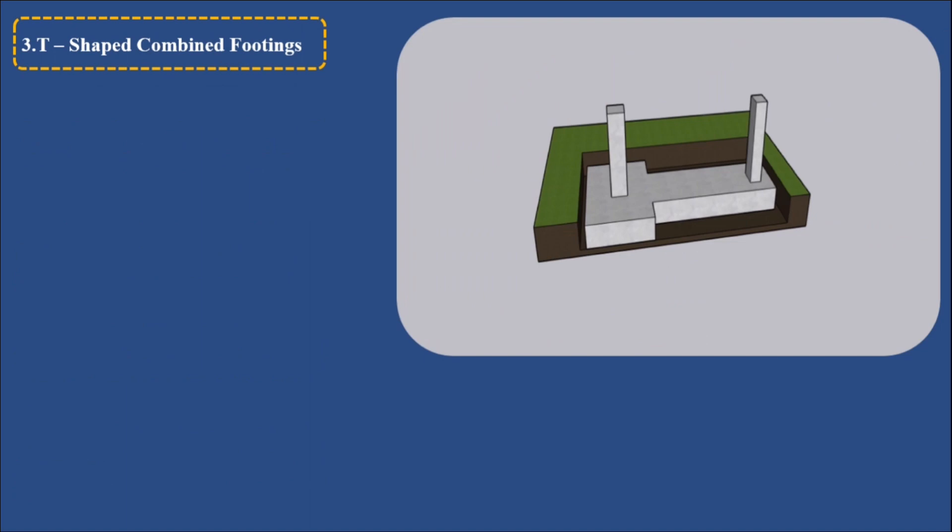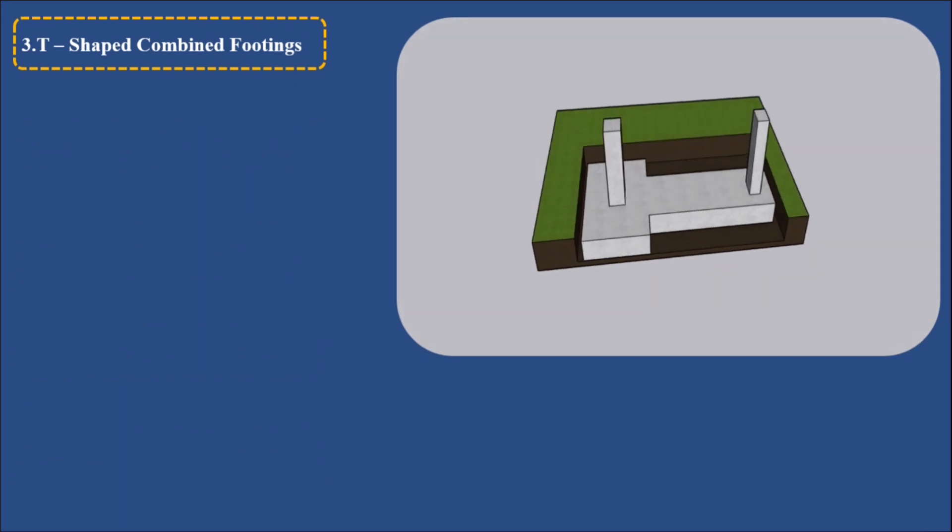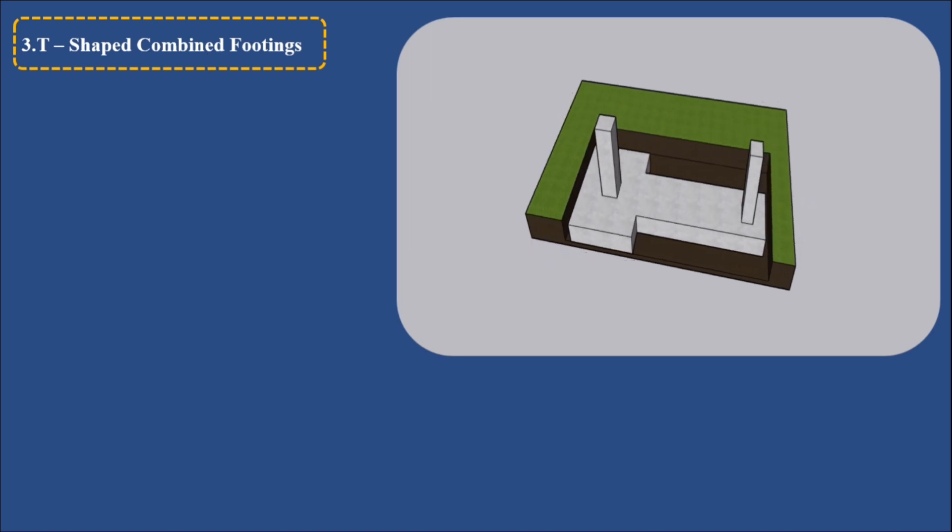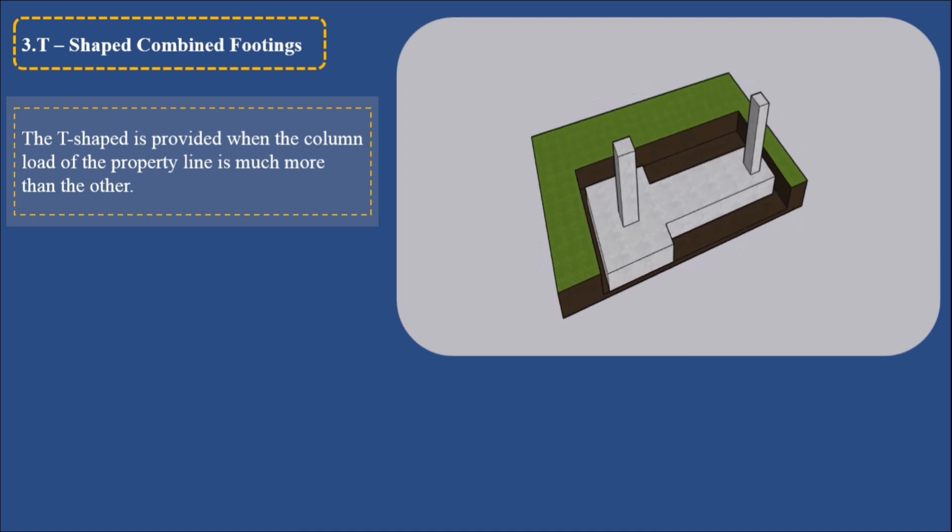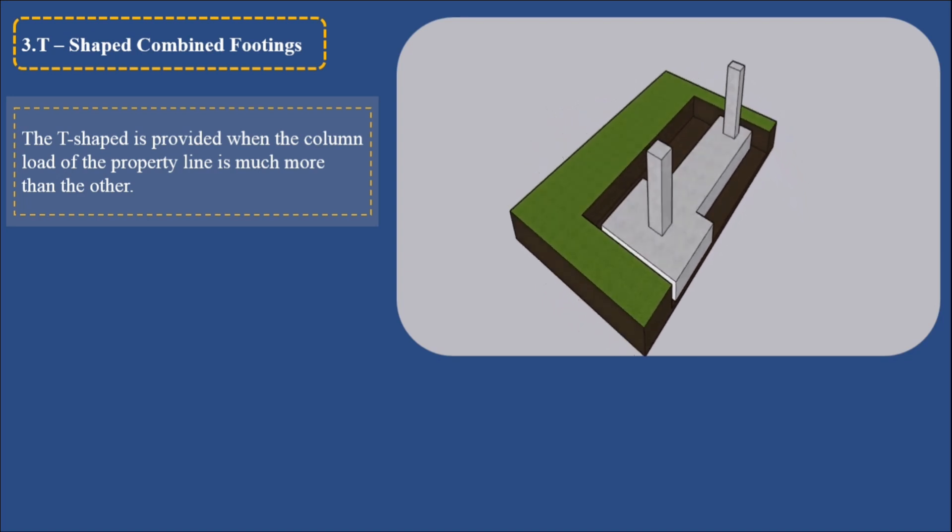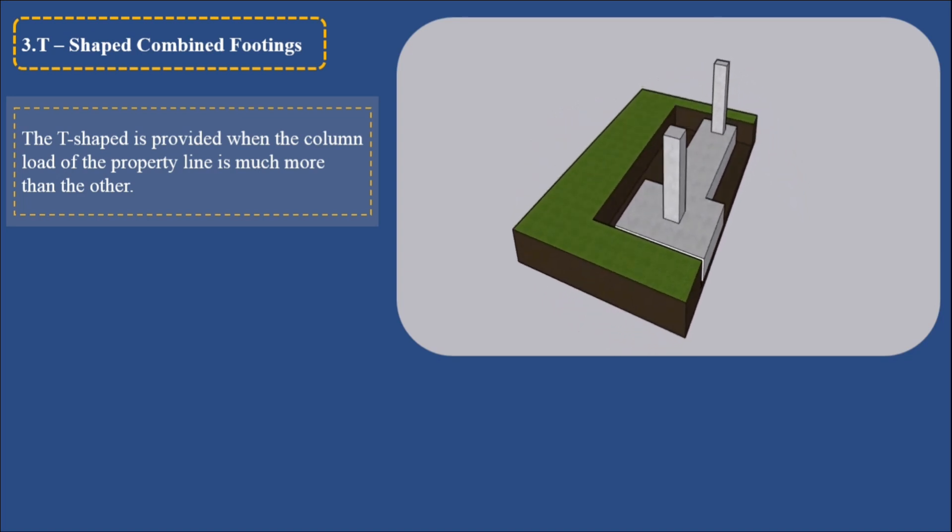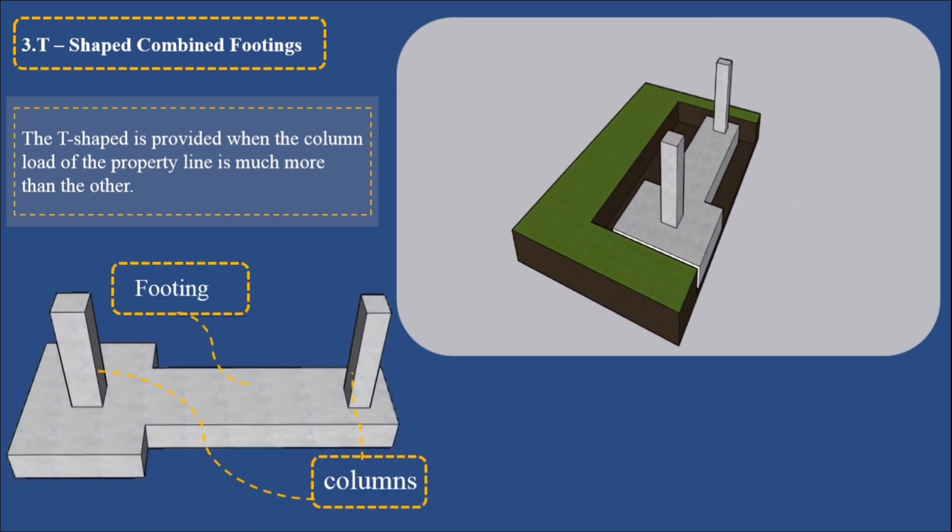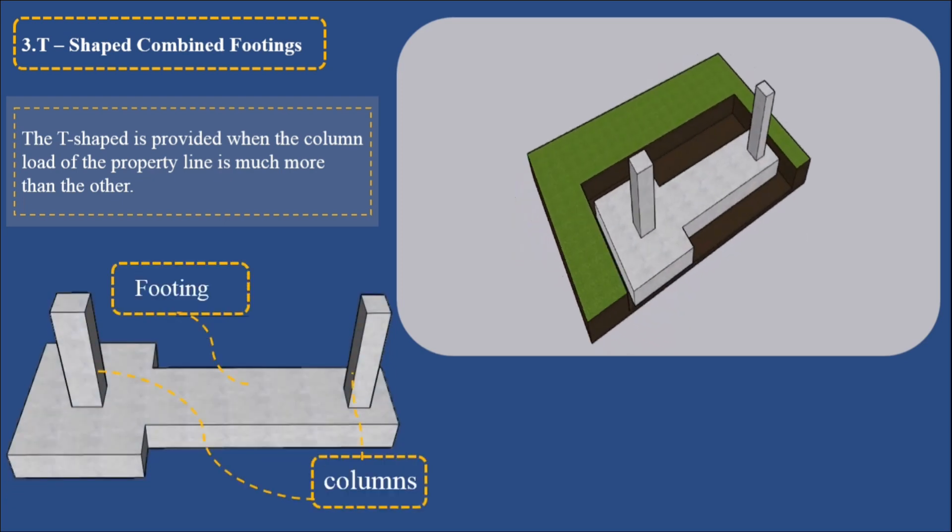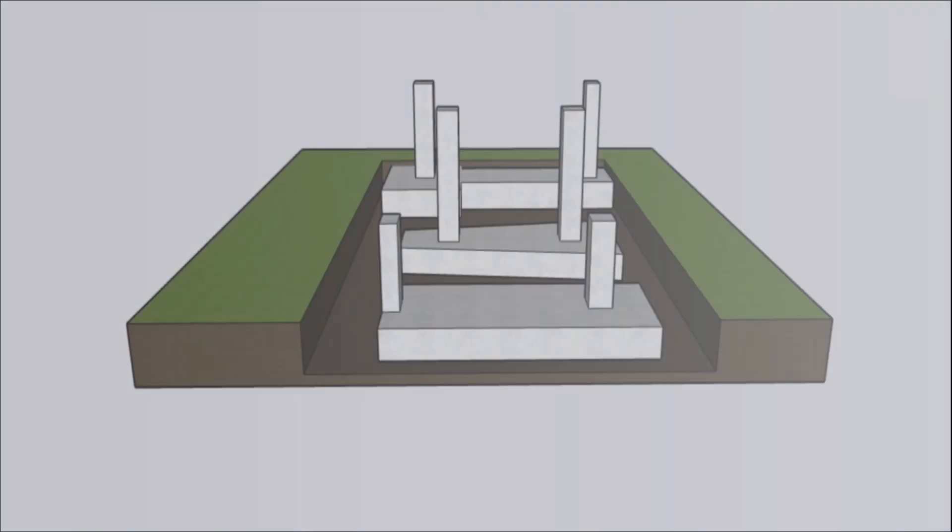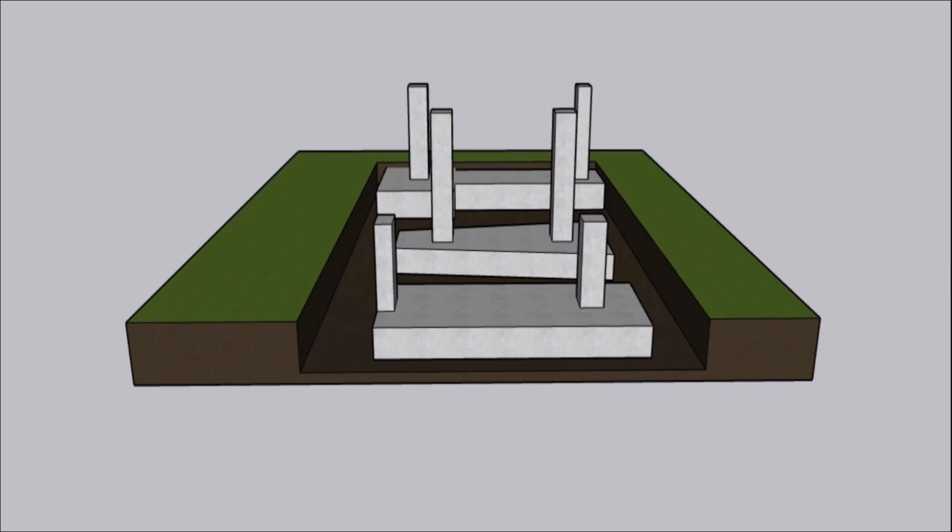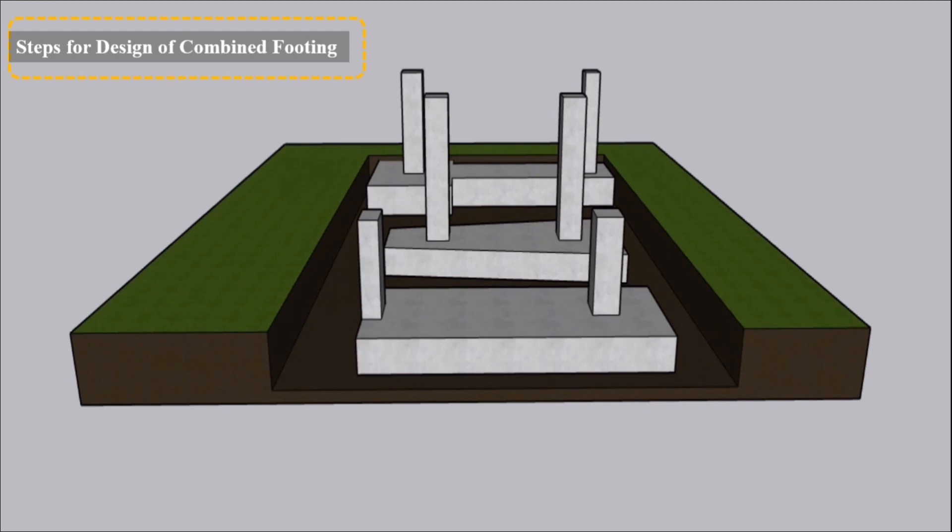3. T-shaped combined footings: The T-shaped is provided when the column load of the property line is much more than the other.